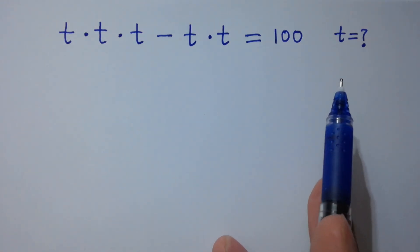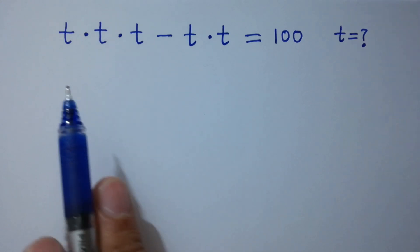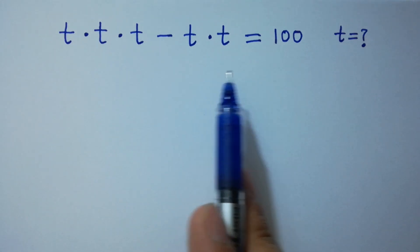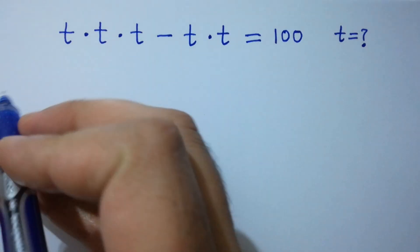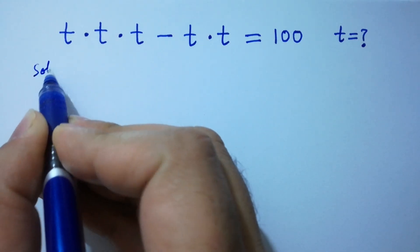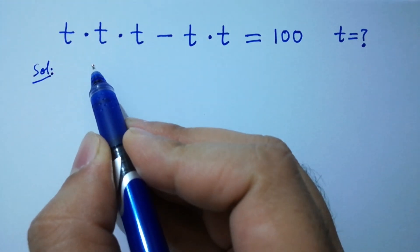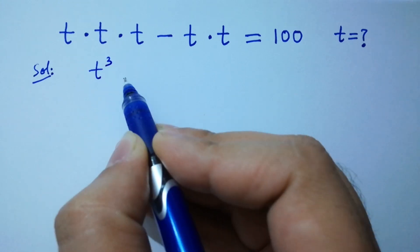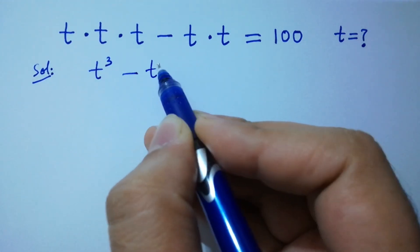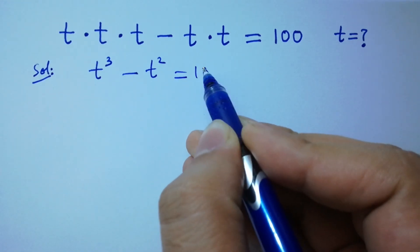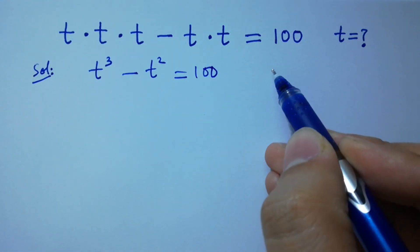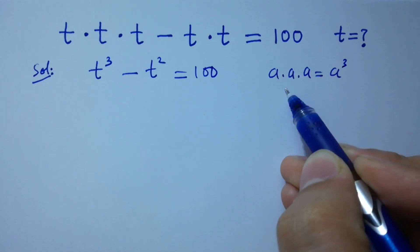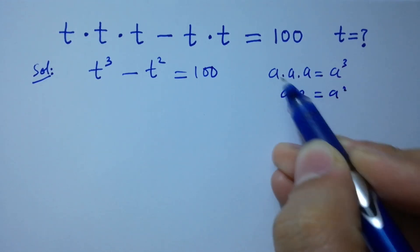Hello friends. Find the value of t if t times t times t minus t times t equals 100. Let's have a solution. This question is the same as t cubed minus t squared equals 100, since a times a times a equals a cube and a times a equals a square.